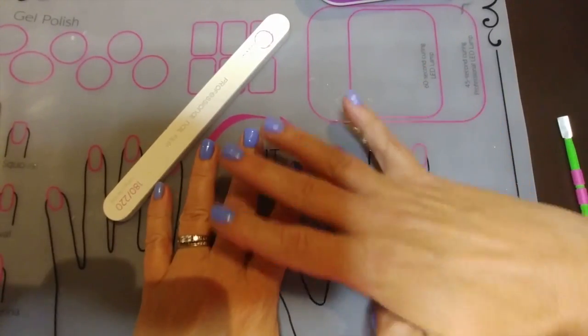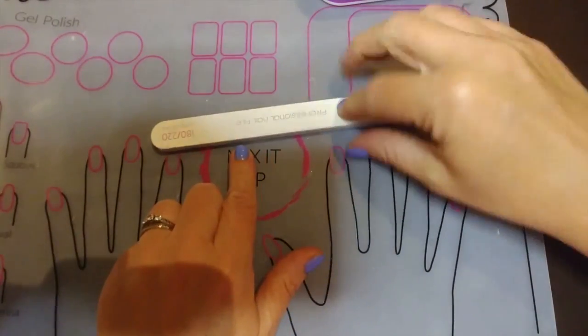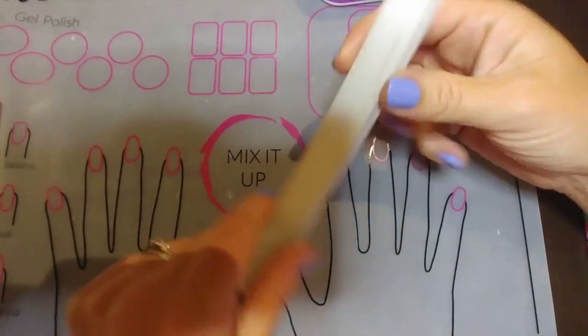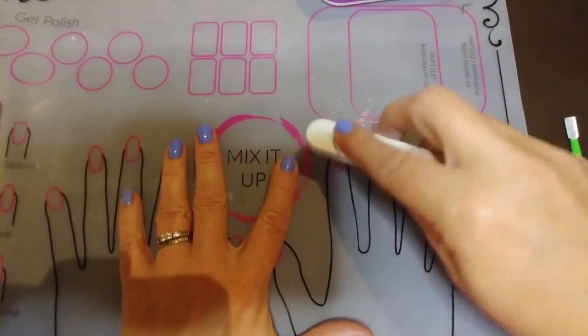All you need is your handy dandy nail file and buffer, and you're going to be using your buffer side. All you're doing is giving it a light buff.